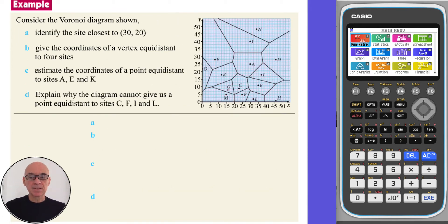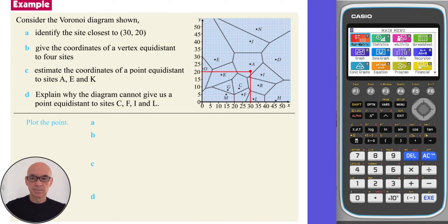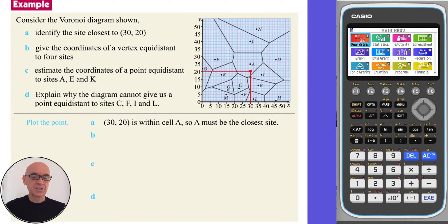In part A of this question, we are asked to identify the site closest to the point (30, 20). Plotting the point, we see that (30, 20) is within cell A, so A must be the closest site.